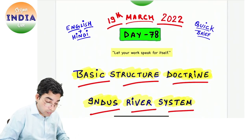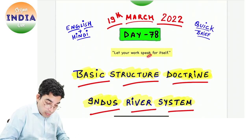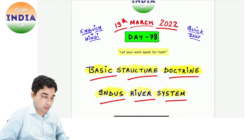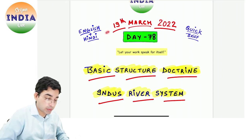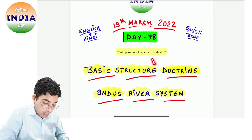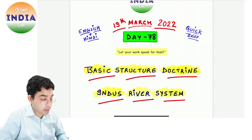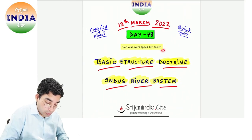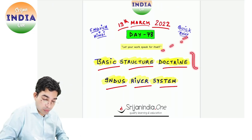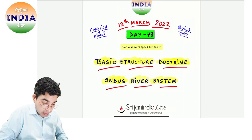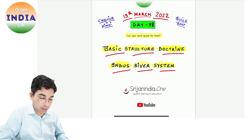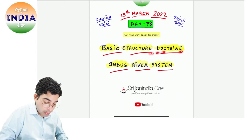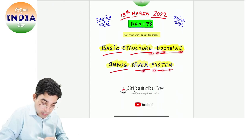Hi, let your work speak for itself. Today is 19th of March 2022. Let us have a quick discussion of all these important topics. Aaj The Hindu or Indian Express dono ka off hai, but for us, everyday means everyday. So aaj hum ye do topics bahut achhe se padhne wale hain: Basic Structure Doctrine and Indus River System.